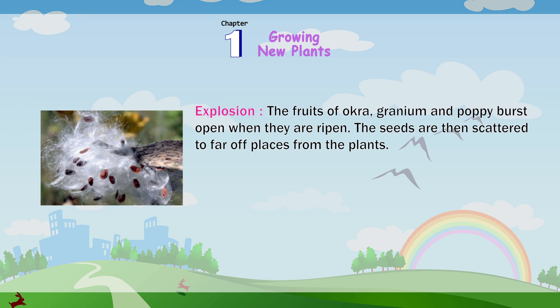Explosion: The fruits of okra, geranium and poppy burst open when they are ripened. The seeds are then scattered to far-off places from the plants.